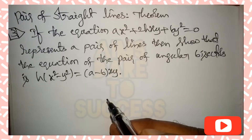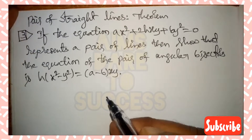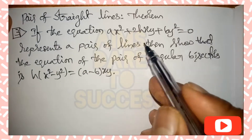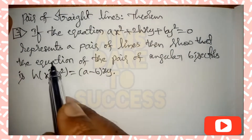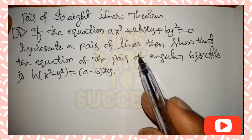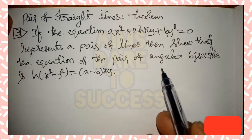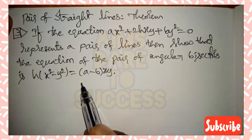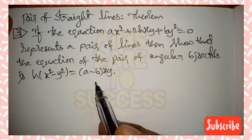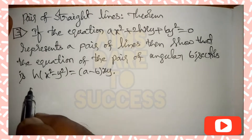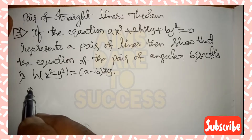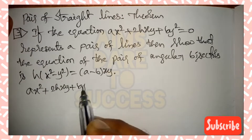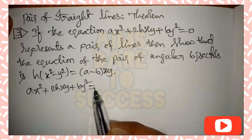Hi, hello, namaste — welcome to AIMS Dare to Success YouTube channel. Today we are discussing about pair of straight lines. Theorem: if the equation ax² + 2hxy + by² = 0 represents a pair of lines, then show that the equation of the pair of angular bisectors is h(x² - y²) = (a - b)xy. I will explain this theorem in an easy method.